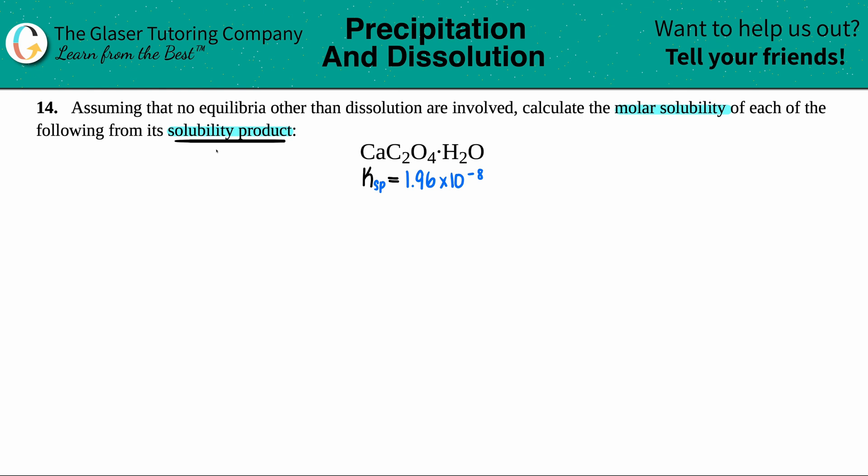And remember, the solubility product is just a Ksp. So I had to go in the back of the textbook to get what the Ksp value is of CaC2O4·H2O. That's 1.96 times 10 to the negative eighth.